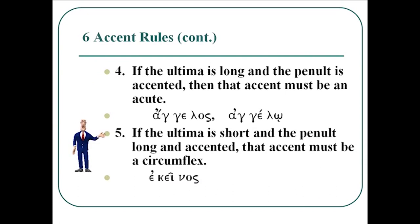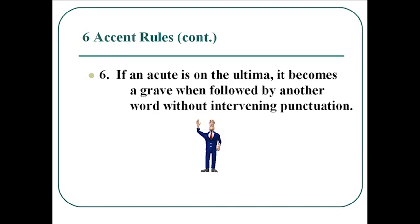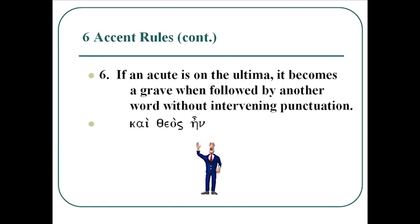Rule five says if the ultima is short and the penult is long and accented, that accent must be a circumflex. So if the ultima is short, in the case of ekeinos, the penult with the diphthong epsilon-iota is long and therefore must take a circumflex. Finally, the sixth accent rule is that if the acute is on the ultima, it becomes a grave when followed by another word without intervening punctuation. Thus, kai theos en — you see the grave on kai should have been an acute, but it goes to a grave because theos follows it. Similarly, theos should have an acute, but because it's followed by en immediately, it goes to a grave.